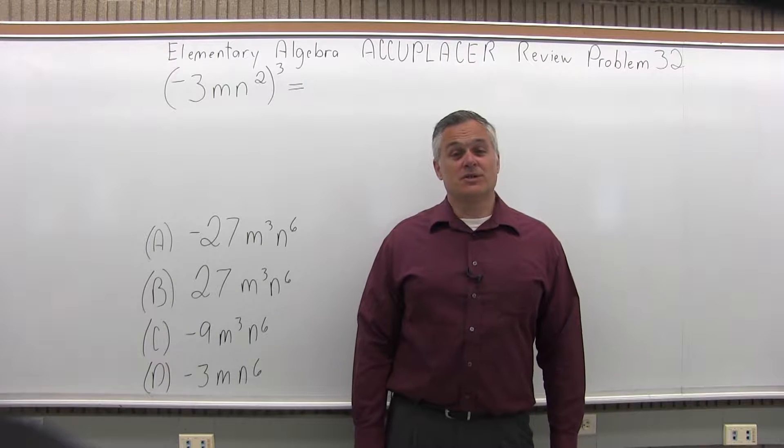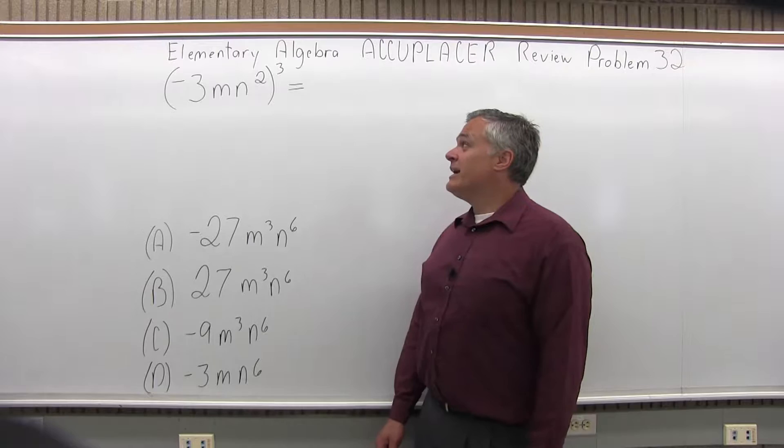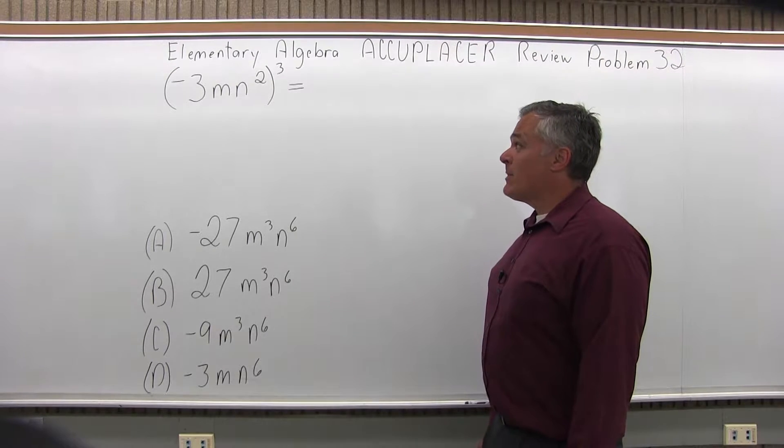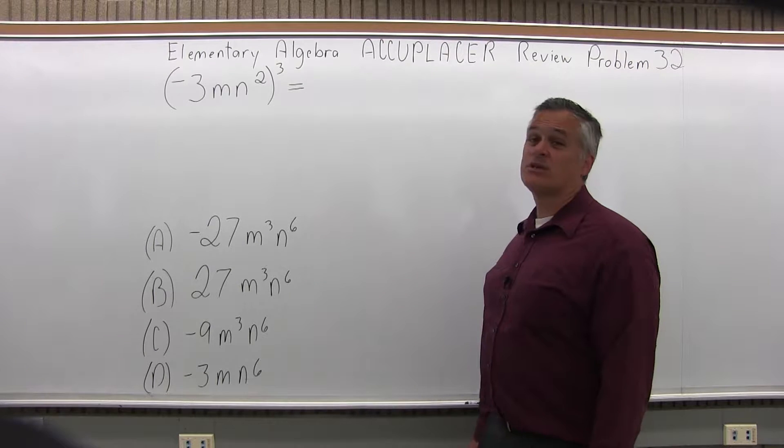This is the Elementary Algebra Accuplacer Review, Problem 32. We have negative 3mn to the second, all in parentheses, raised to the third power.